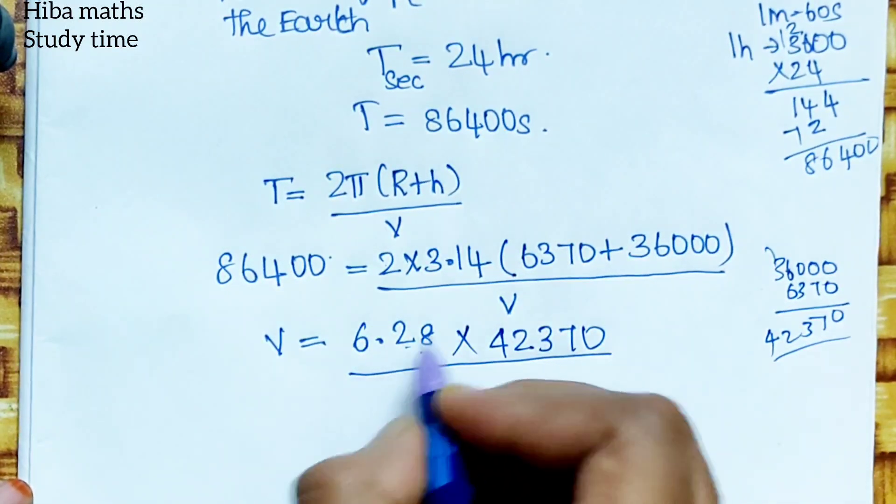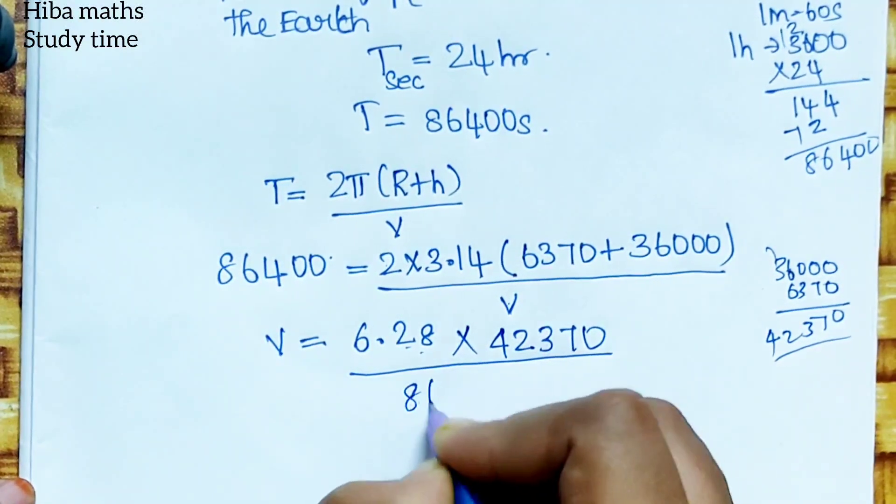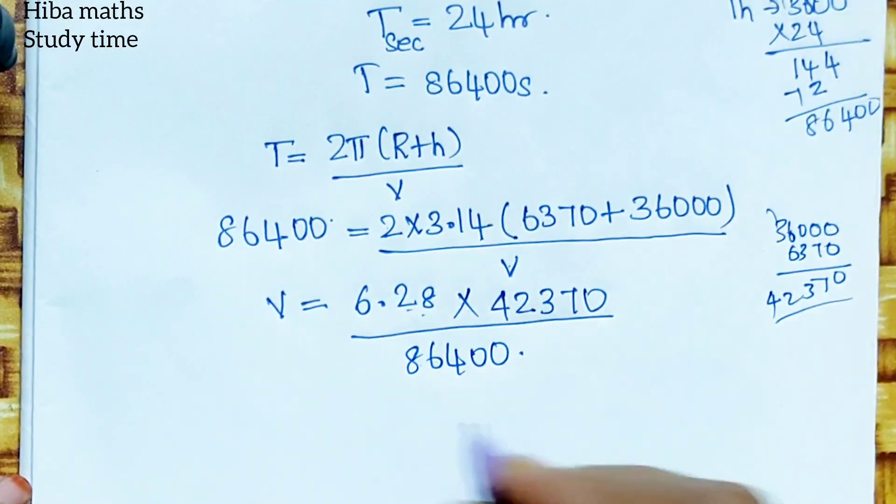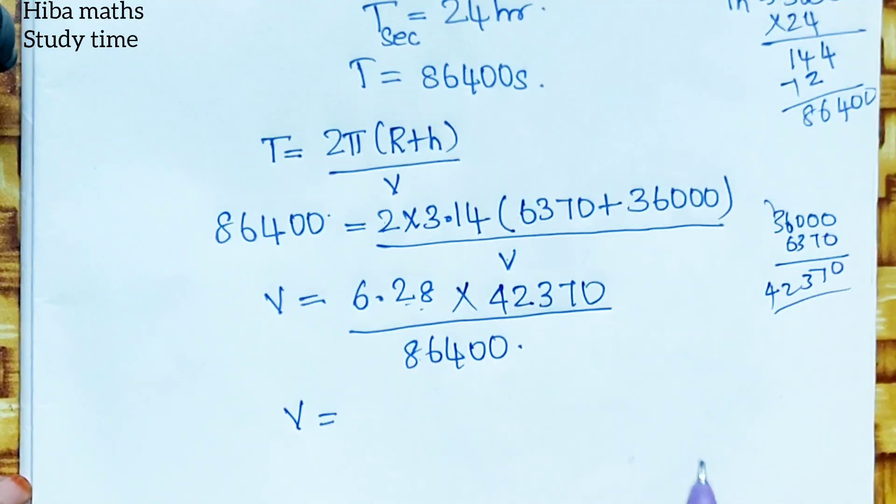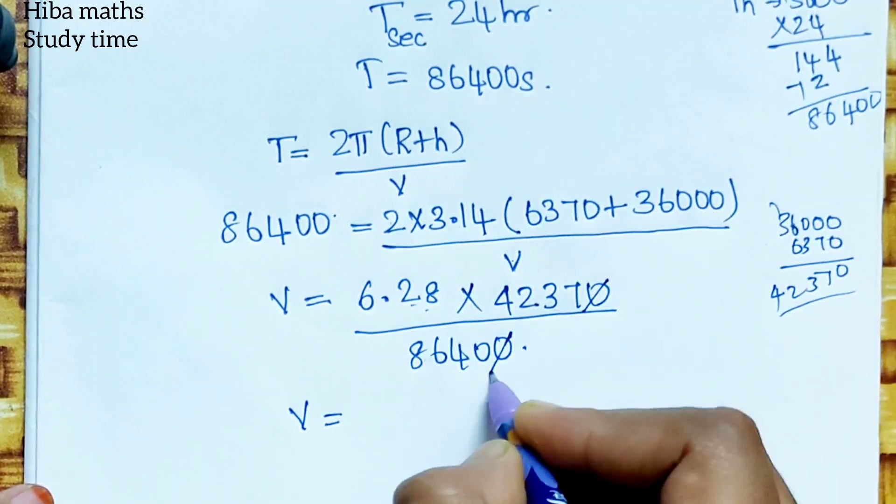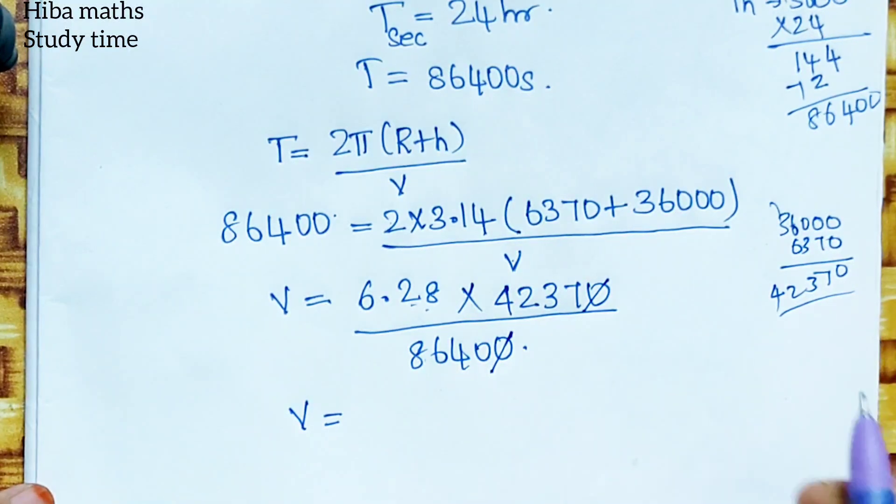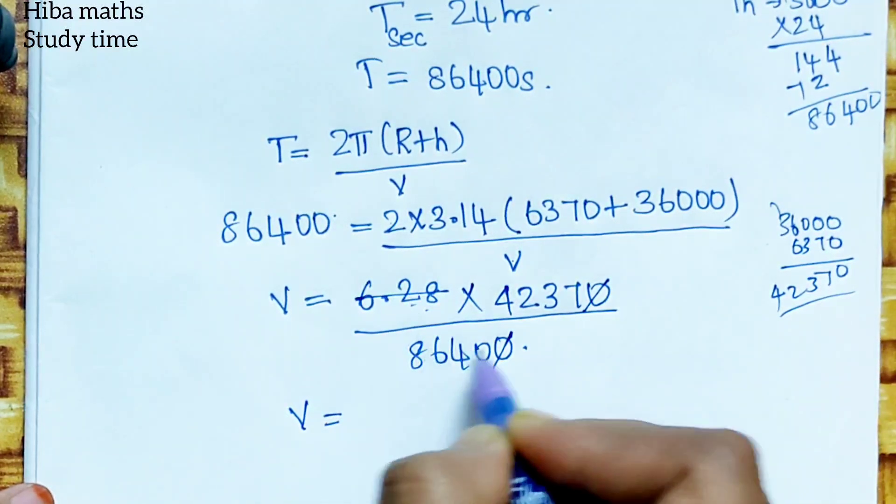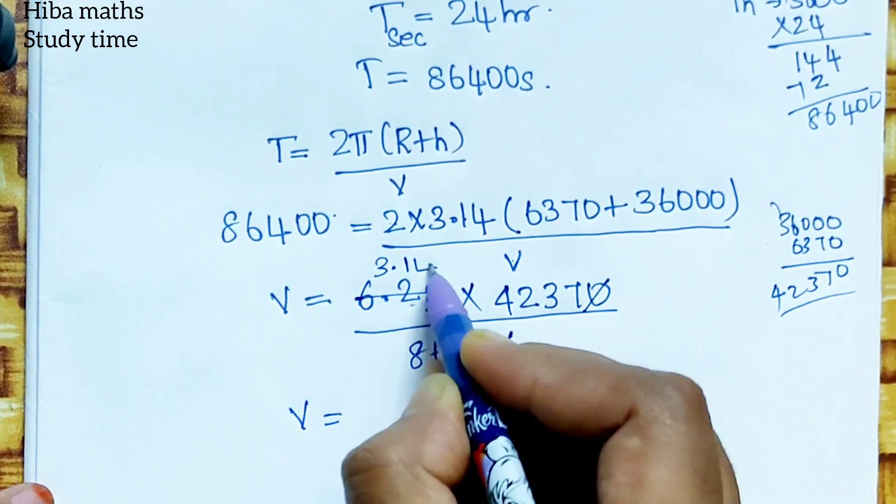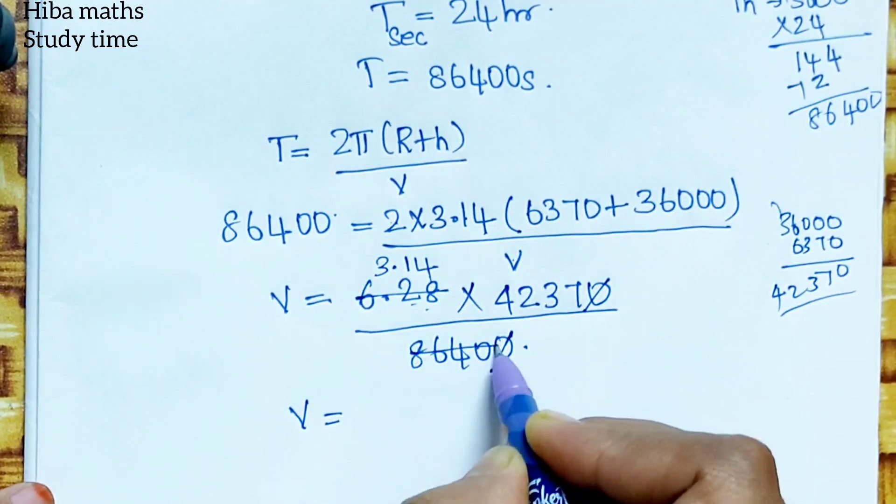Now the velocity is equal to 86,400. Okay, this is the whole thing. Now the division is solved. First, what do we do? 0, 0, cancel. Now what do we do? We divide the two tables in the table. So 2 into this, then direct 3.14. What do we do? 2, 4, 2, 3, 2, 2, 0.